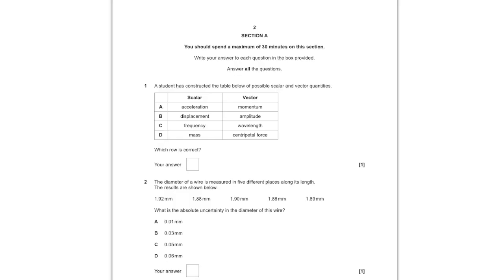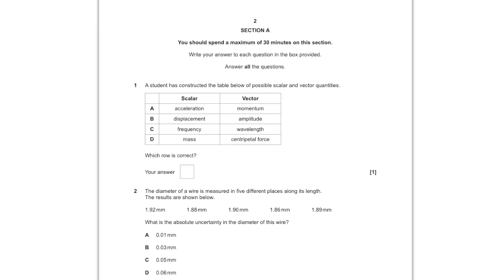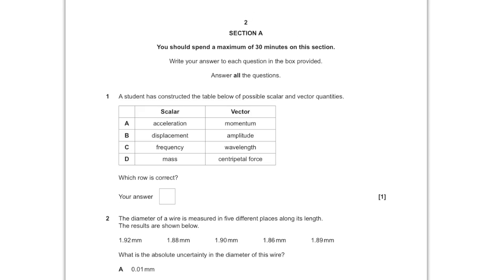In the first question, a student has constructed a table of possible scalar and vector quantities — which row is correct? For acceleration, it is not a scalar quantity, it is a vector quantity, so that's out. Displacement is also a vector quantity. Frequency — yes, it is a scalar quantity. However, wavelength is a scalar quantity too, so that's out. So D is the answer.